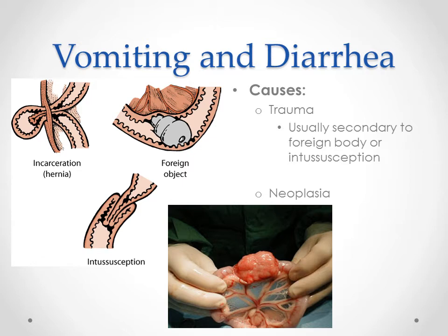Incarceration occurs if your patient has a hernia or a hole in the body wall — some of the intestines can slip through and get squished in that area. Whenever we find hernias, especially umbilical hernias at the ventral aspect of the body, we check that frequently to make sure they're nice and small so that an intestinal loop cannot fit through, because it's very bad for your patient if that happens and you don't realize it right away.